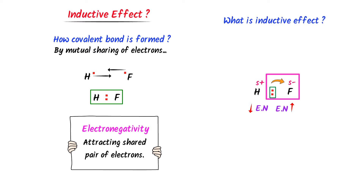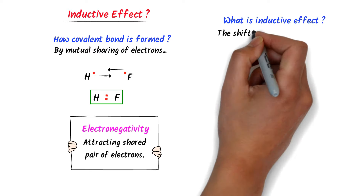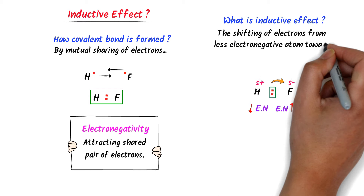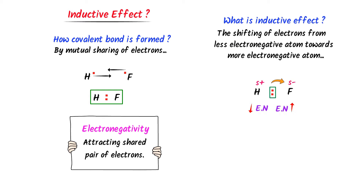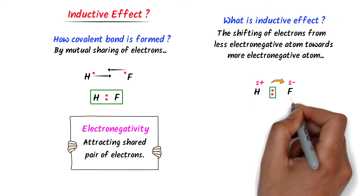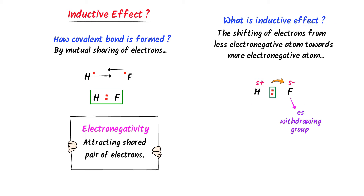This shifting of electrons towards fluorine is known as inductive effect. Therefore, we define inductive effect as the shifting of electrons from a low electronegative atom towards a high electronegative atom in a covalent bond. This fluorine is known as an electron withdrawing group, and we represent it by negative I.